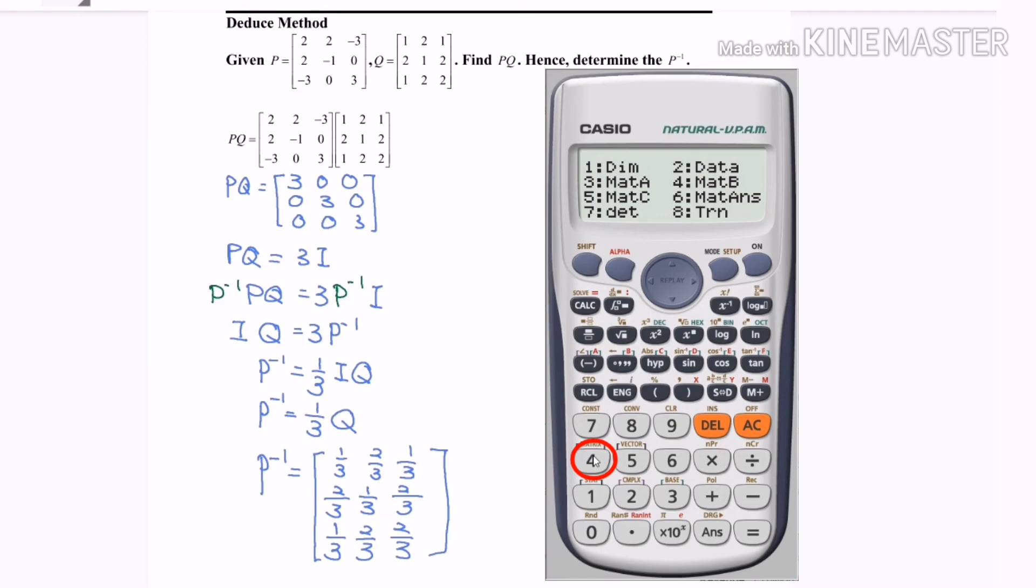We have to call up the matrix P, so in the calculator we name it as matrix A, so we are going to press number 3. So now we are going to press the inverse button. The location for the inverse button is below the mode button, x power negative 1. That is the symbol for inverse, so here matrix A inverse.